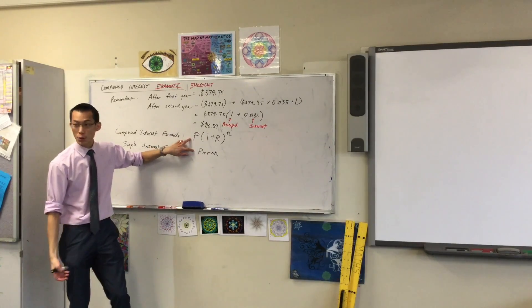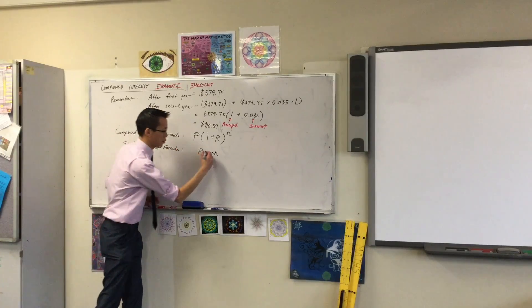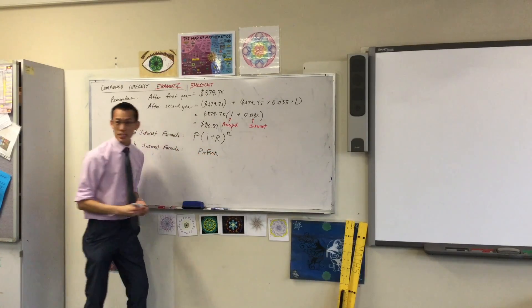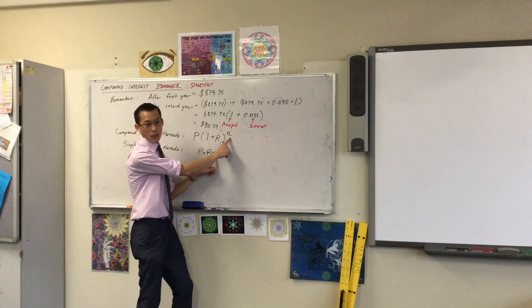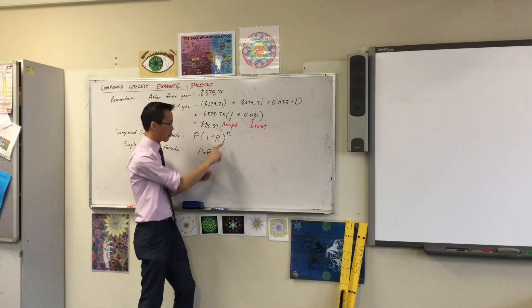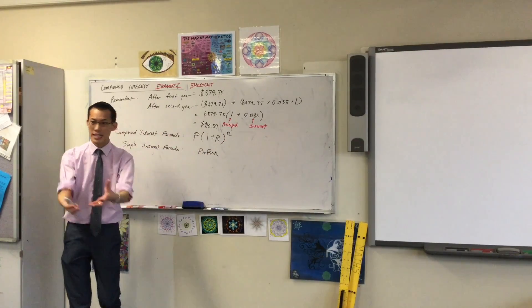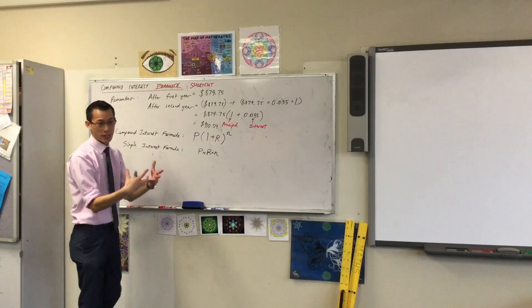Now I want you to notice how similar these are. They all have the same set of three numbers or three letters, right? You need the principle, you need to work out, I should have put that in capital so it's consistent. You need to know an interest rate and then you need to know how long is that stuff in the bank account for, right? So very, very similar. They're taking the same ingredients as it were.